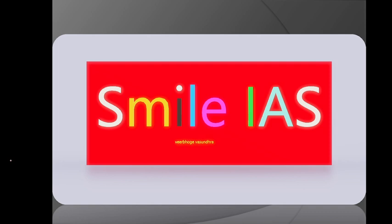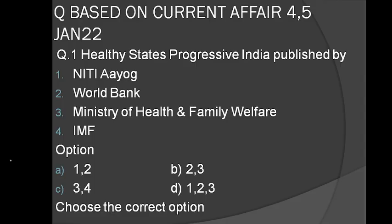Hi guys, this is Rishab. Today I'm going to complete a question based on current affairs from 4th and 5th January 2022. The question is about 'Healthy State Progressive India' published by — Niti Aayog, World Bank, Ministry of Health and Family Welfare, and IMF — with options one-two, two-three, three-four, and one-two-three.